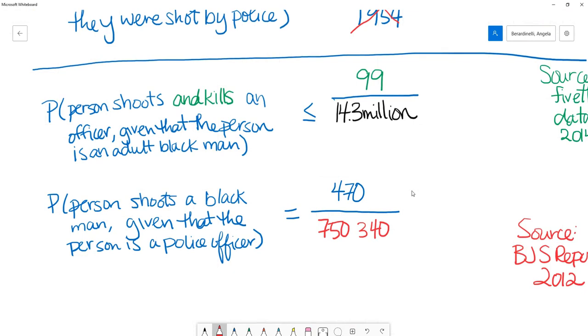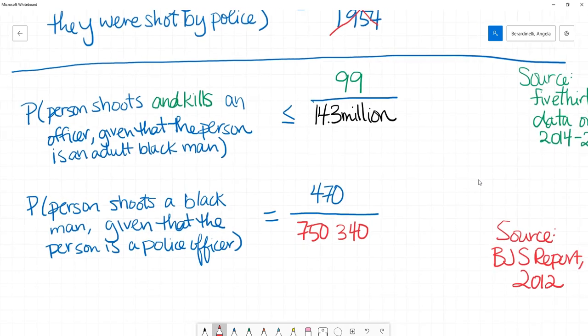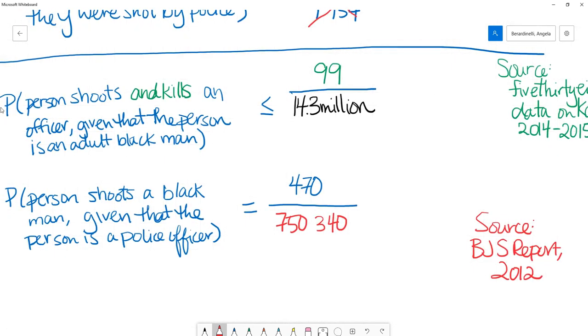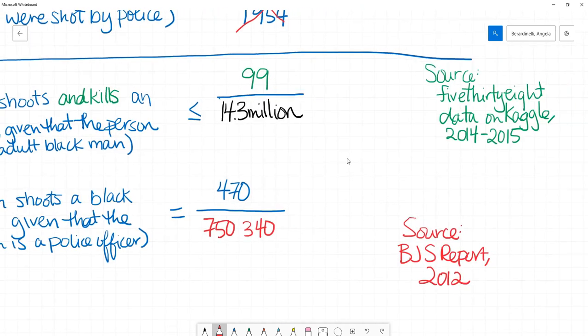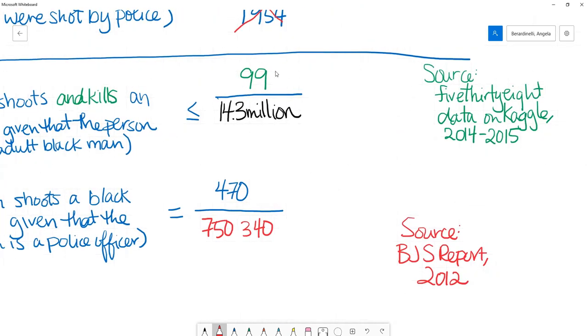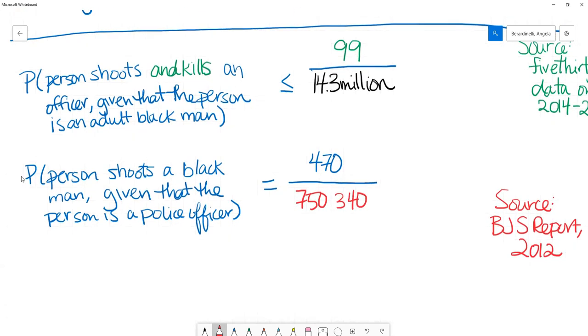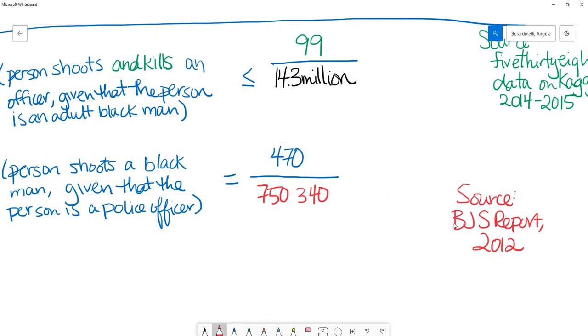The other statistic that we were interested in trying to get an exact computation for was the one that was mentioned in the Daily Show clip that we watched. The probability that a person shoots and kills an officer given that the person is an adult black man. So from the US Census we got the number of adult black men, and then from the data on Kaggle we got the number of police officers who were shot and killed. And then the probability that a person shoots a black man given that that person is a police officer.